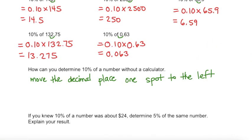So if we know 10% of a number was about $24, how much do you think 5% of the number would be? So 10% of a number was $24 and 5% is half of 10%. So half of $24 would be $12.